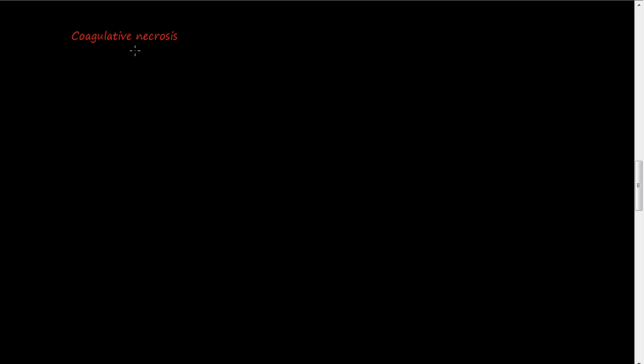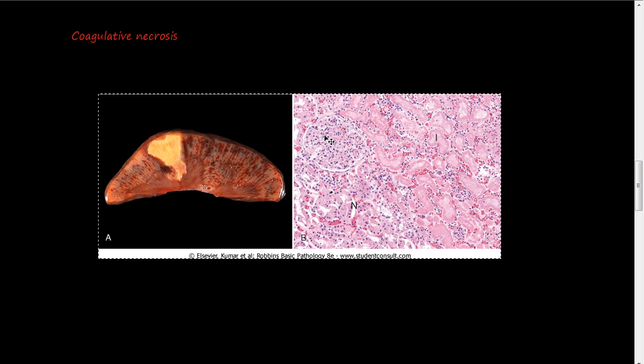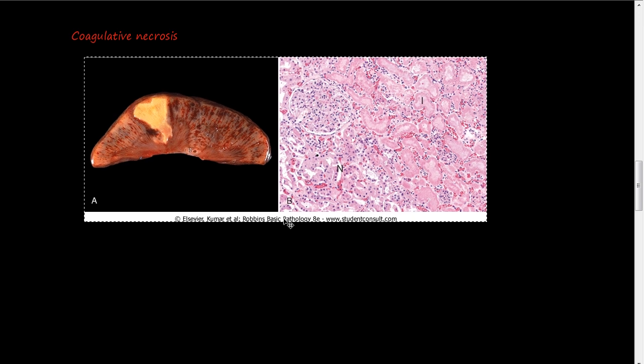Coagulative necrosis. For that I'm going to use a picture out of Robins basic pathology, 8th edition. So here is coagulative necrosis. You see that the appearance or the structure of the gland or the tissue is still kind of intact. That's one of the features of coagulative necrosis.